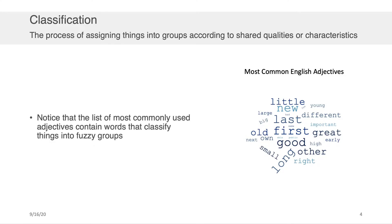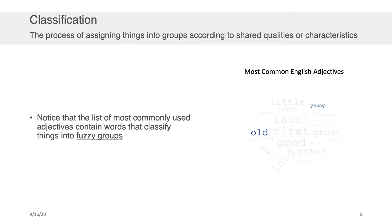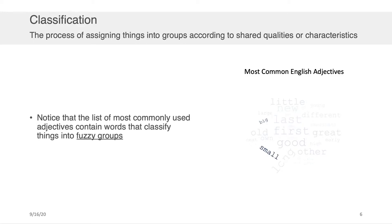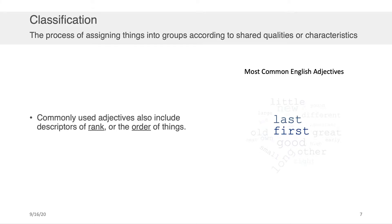If you pay attention to this list of commonly used English adjectives, you're going to notice that it contains a lot of the kinds of words that are helpful for classification. For example, old and young, big and small, last and first are among the most commonly used English adjectives. Big and small give us a rough binary categorization, while words like last and first describe the rank or order of phenomena.